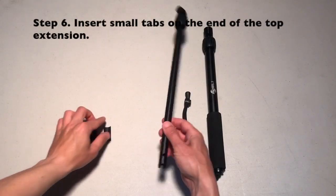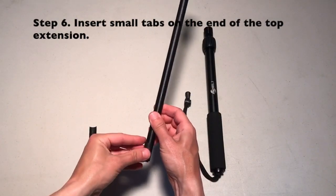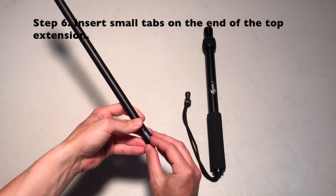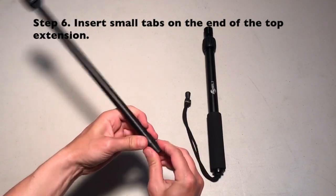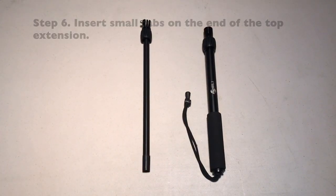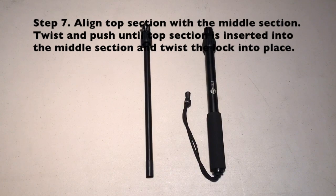Step six: insert small tabs on the end of the top extension. Twist the lock into the end of the middle section.